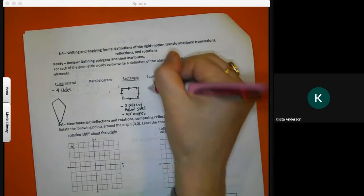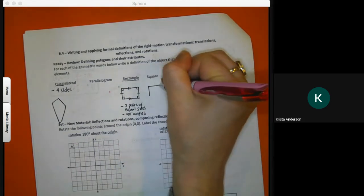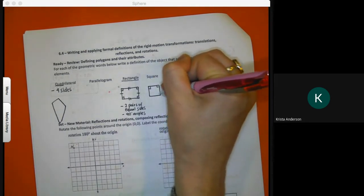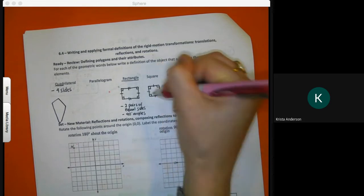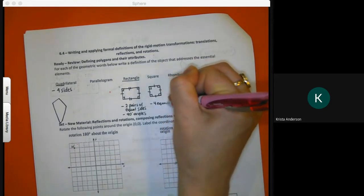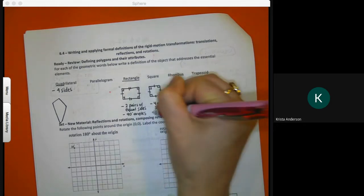What's the difference between a square and a rectangle? Square, all the sides are the same. So four equal sides and 90 degree angles.